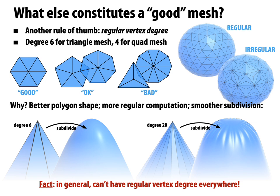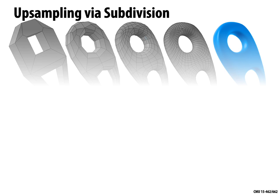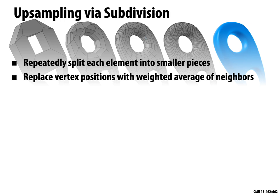We can be thoughtful about where we put irregular vertices and try to keep them to a minimum. Our basic tool for upsampling is subdivision. The basic idea is to repeatedly split each element into smaller pieces — that's a statement about connectivity — and then replace vertex positions with a weighted average of neighboring vertex positions — that's a statement about geometry. Considerations include whether the scheme is interpolating versus approximating and the continuity of the limit surface.